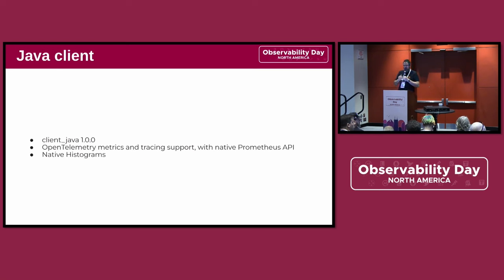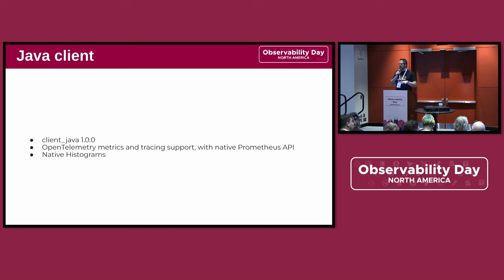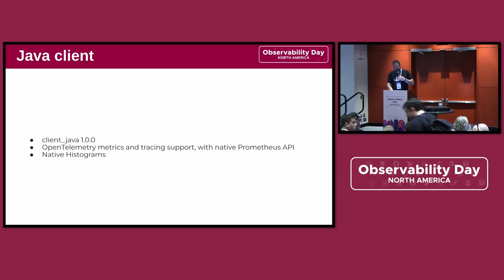The Java client is now stable — it's 1.0. It has a very nice extra feature where it allows you to send, if you so choose, completely native OTLP. But you still get to use the APIs of the Prometheus client library, which means you have to write a lot less code. And it also supports native histograms.